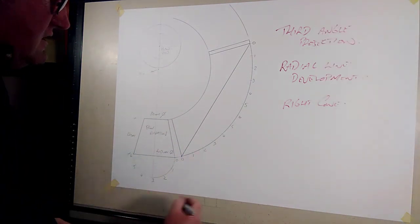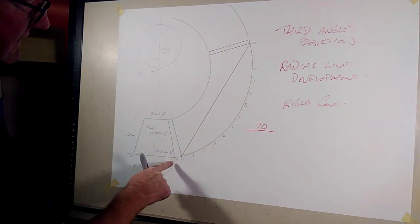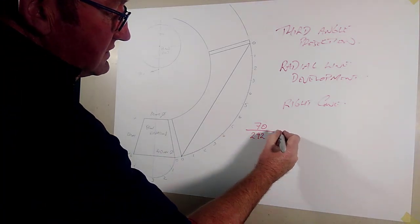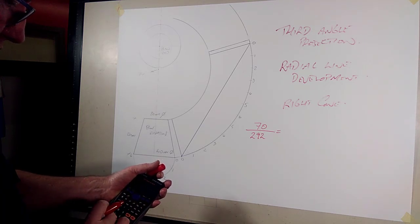The radius is 70mm. I divide that by the slant height which goes from the apex to the very bottom down that outside edge. I've measured that at 292mm. So if I do 70 divided by 292, I get this figure of 0.2397.